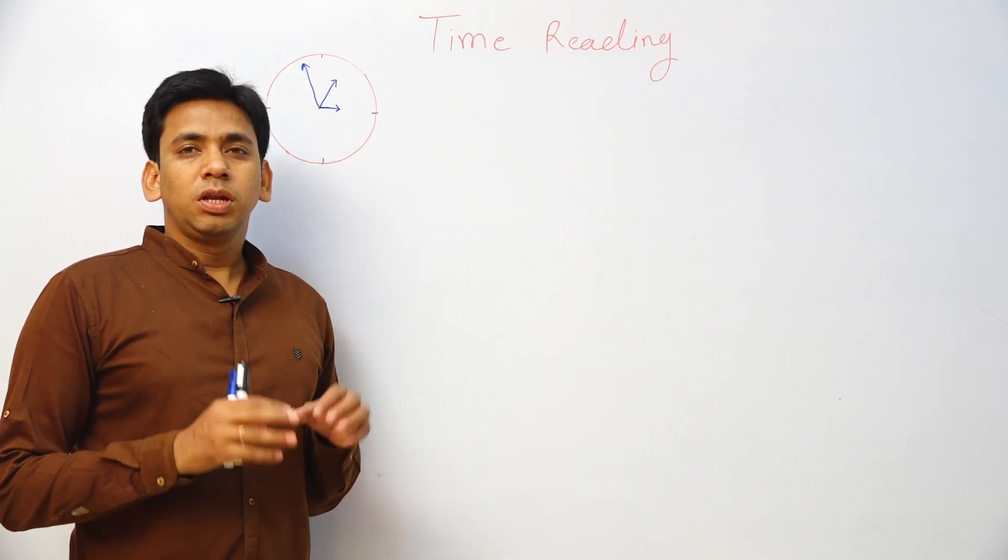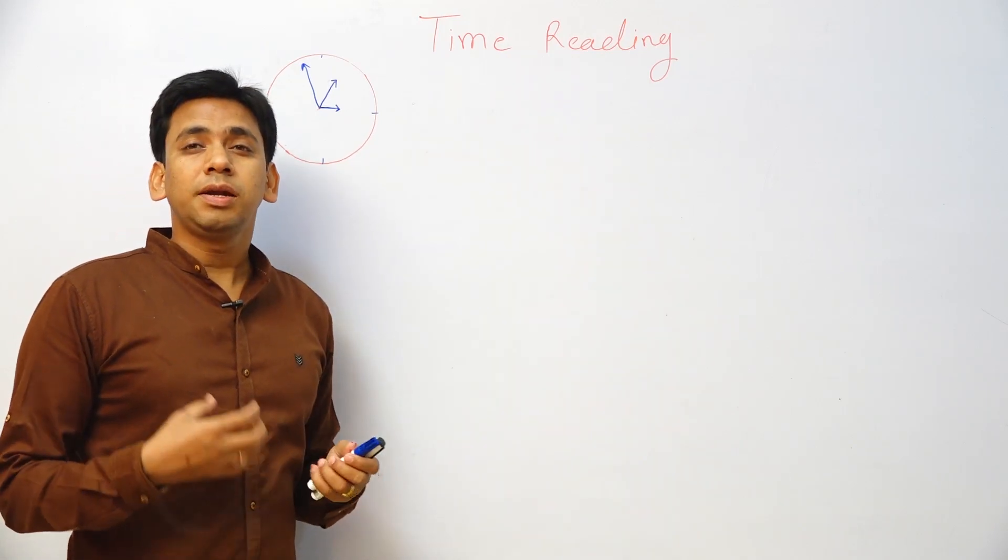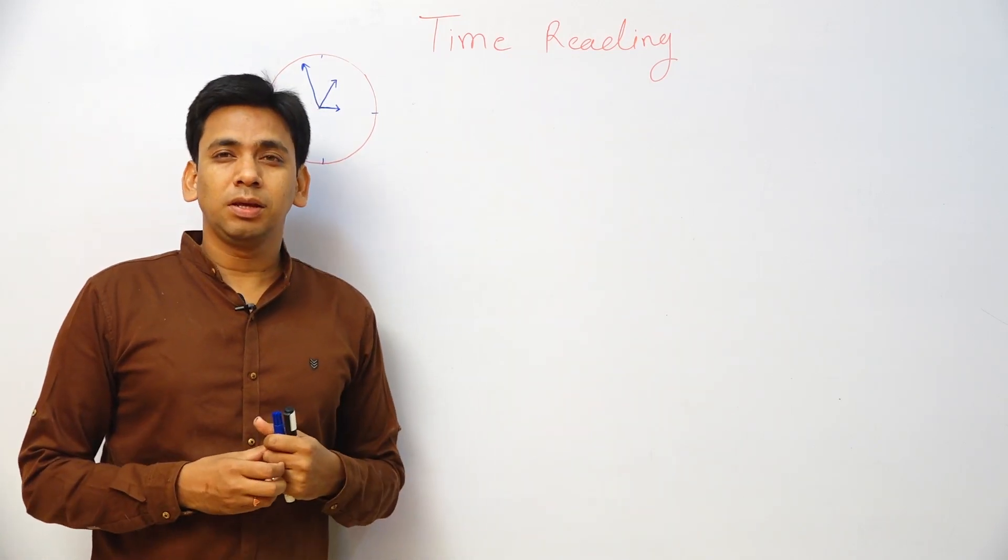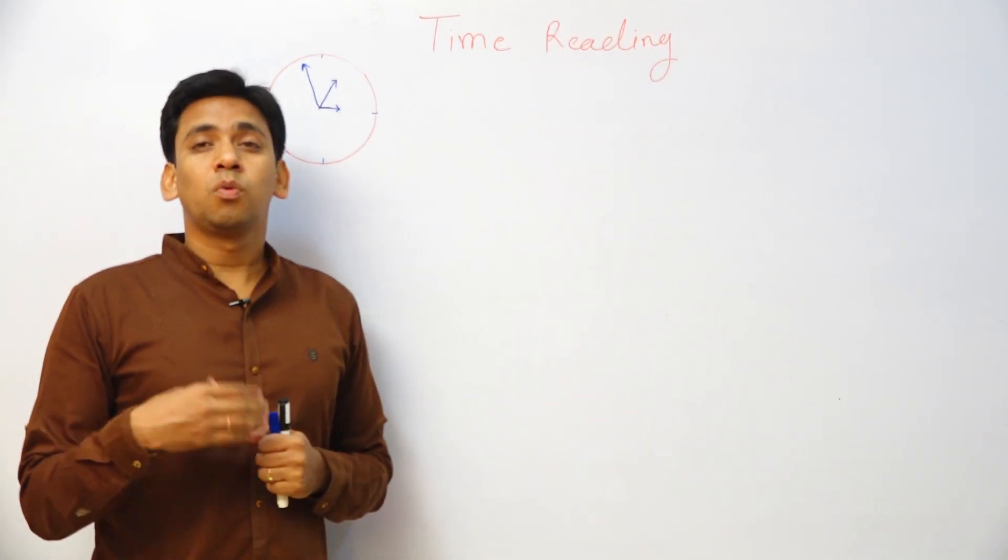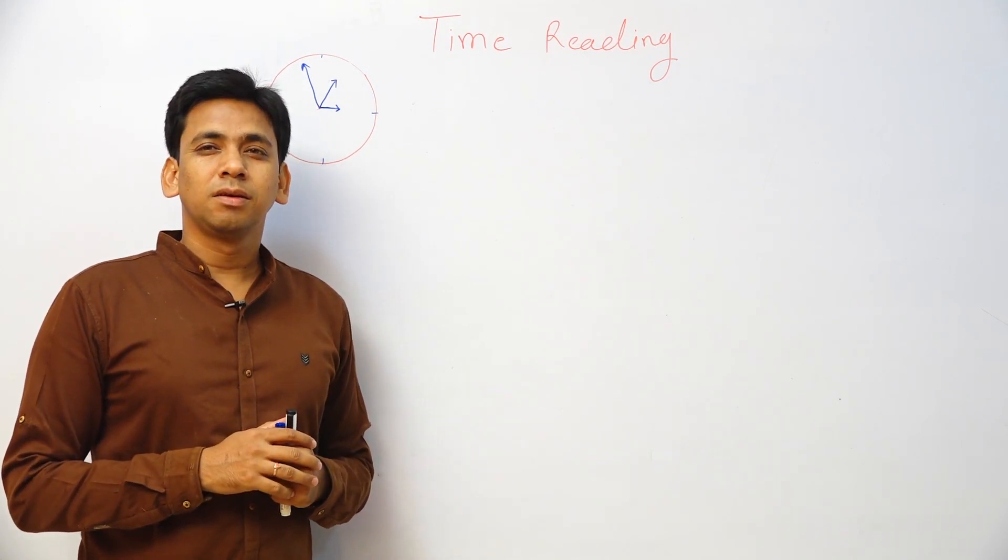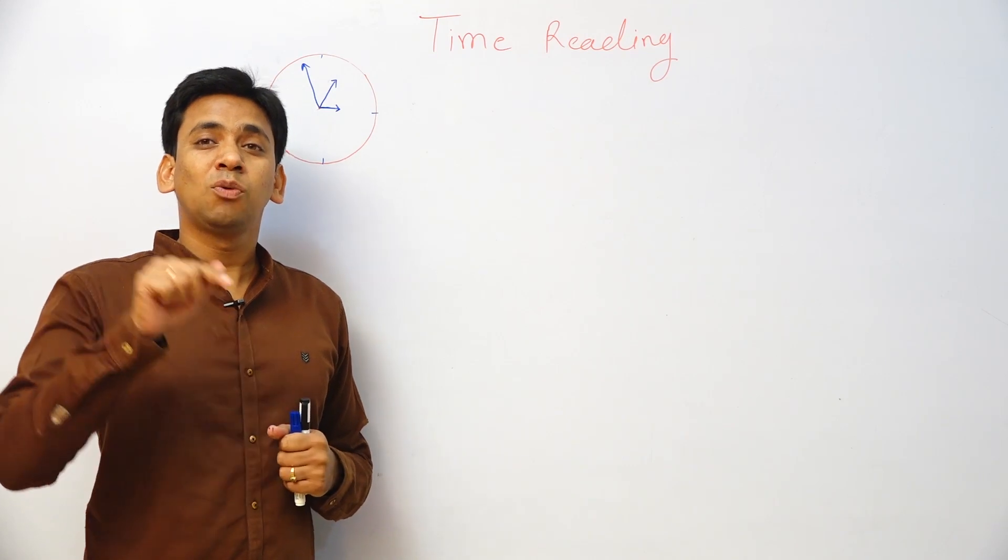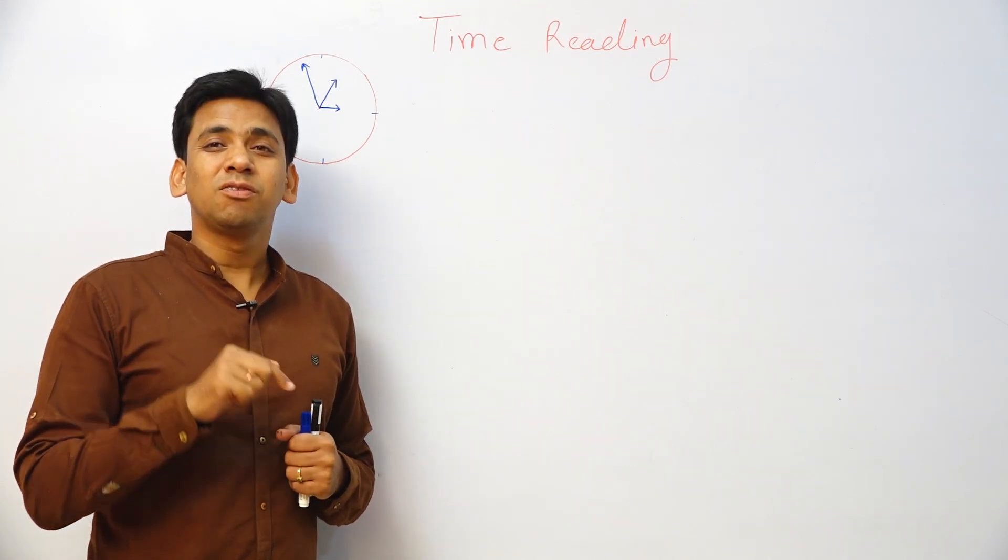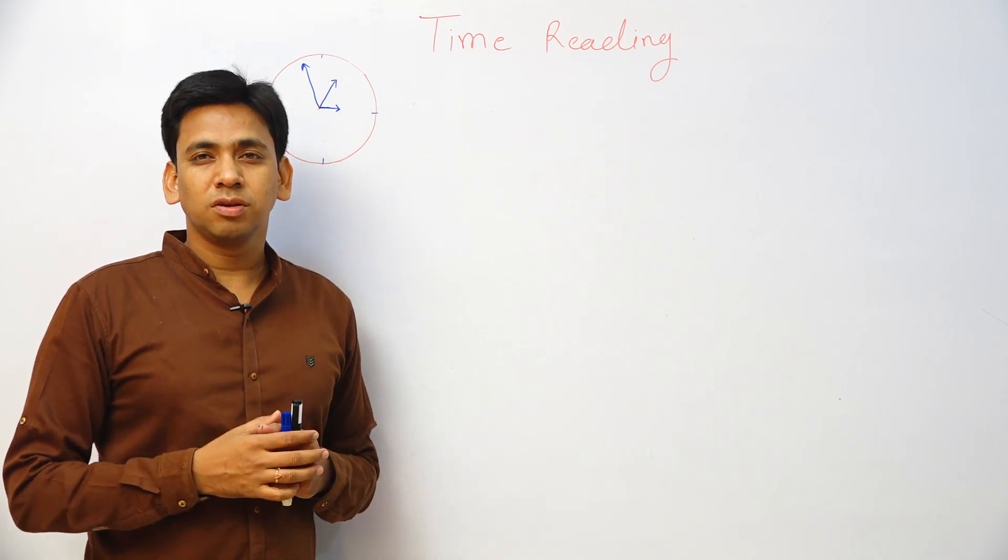Guys, now we are going to learn a very important concept: time reading. How to tell time in English properly. How we tell 10:20, 10:05, 10:05 - it's the wrong concept. 10:20 - it's the wrong concept.